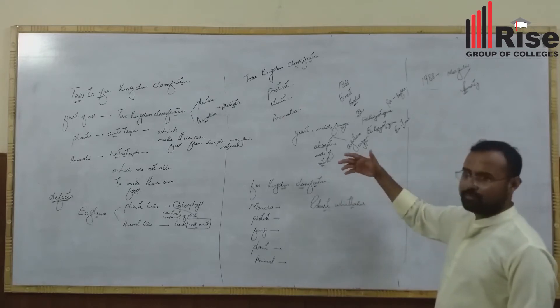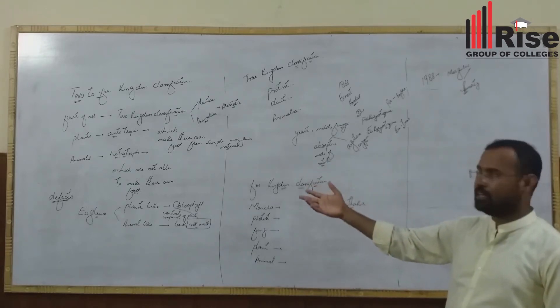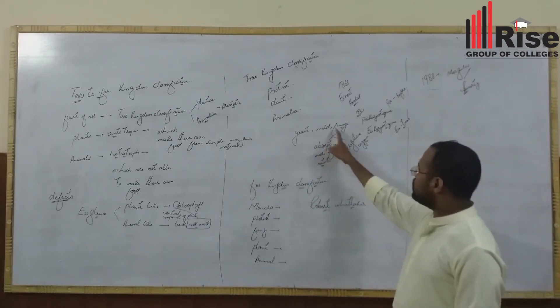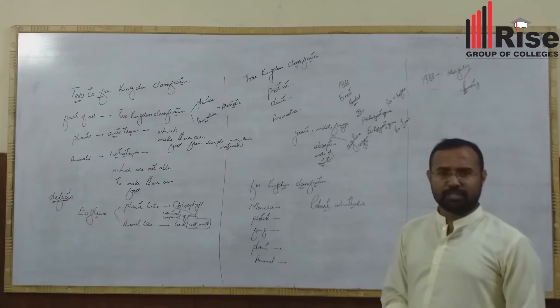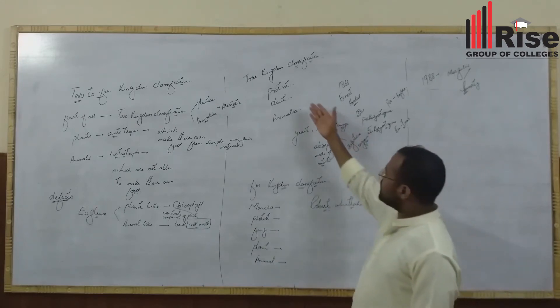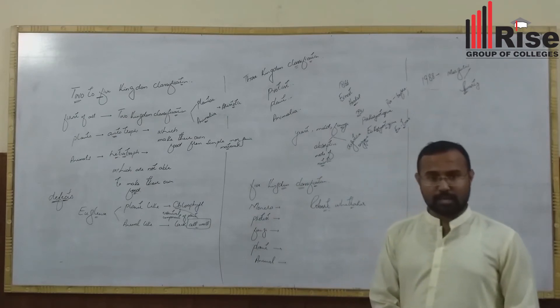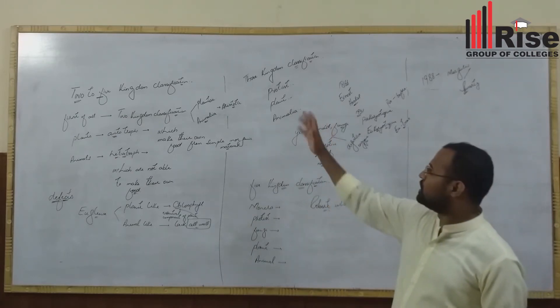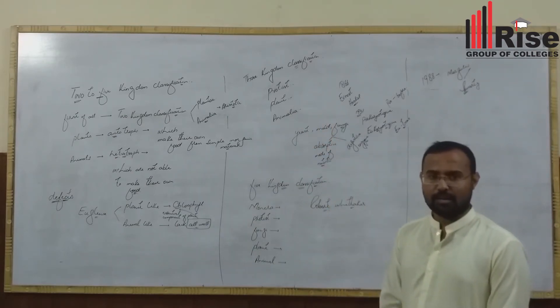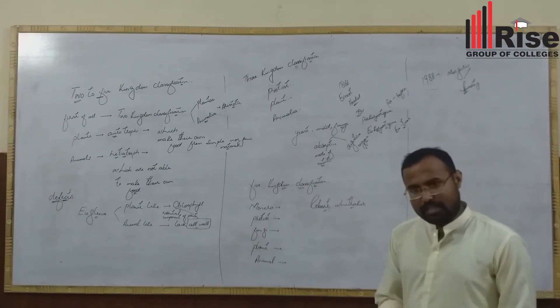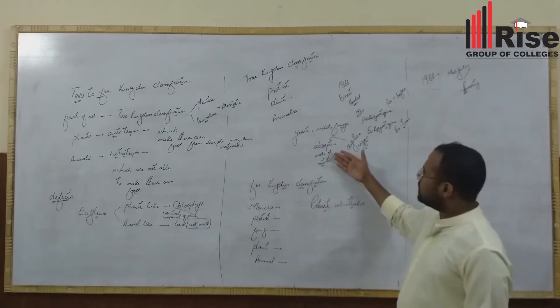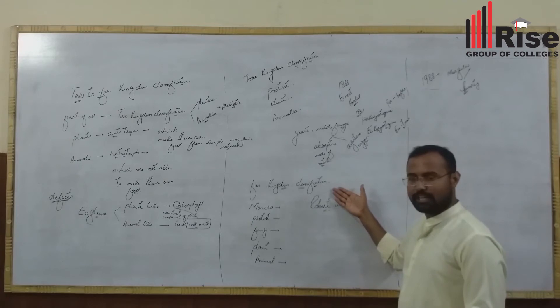Three kingdom classification still has problems. The mode of nutrition of fungi is the main issue. Their mode of nutrition is heterotrophic, not autotrophic. In three kingdom classification, fungi were included in plants. That's why three kingdom classification has problems.